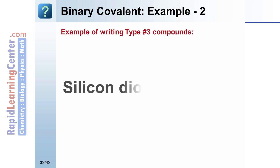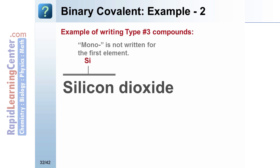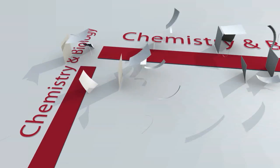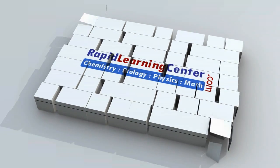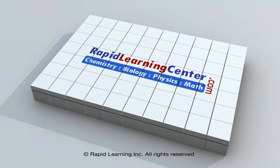Another example: silicon dioxide. Silicon is the symbol Si. We don't use mono with the first word, therefore it's assumed to be one. Oxide is O. The di indicates two, giving SiO2.